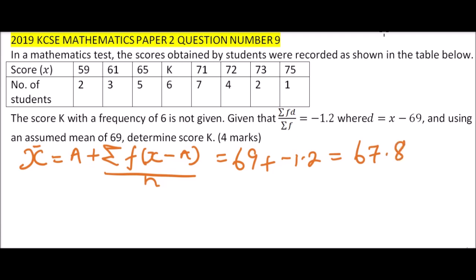We also know that the mean can also be calculated as 1632 plus 6K, all divided by the frequency which is 30, and that will give you 67.8.